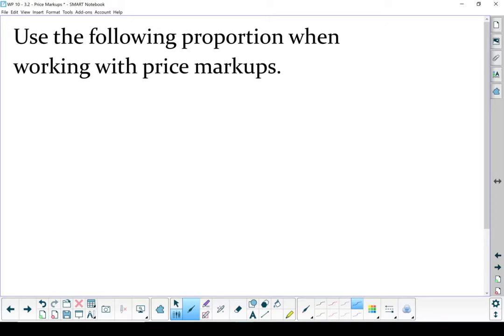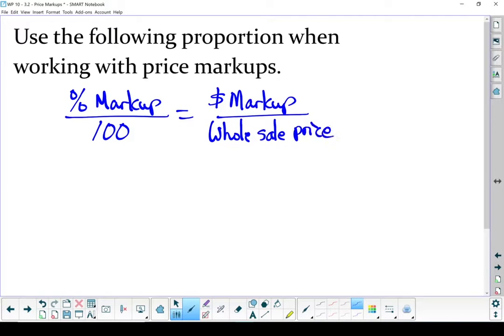When we're working with price markups, we're going to use the following proportion to solve it. Percent markup over 100 equals dollars markup over the wholesale price. This looks a whole lot like our percent proportion we used earlier. And that's because it is the same. The markup is the part that they raised it up, whereas the whole thing is the wholesale price. And we've got a percent and 100 on the other side.